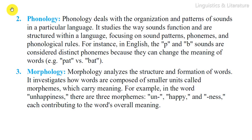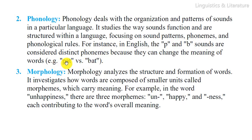For instance, in English the 'p' and 'b' sounds are considered distinct phonemes because they can change the meaning of words — for example, the word 'pet' versus the word 'bad'. The second element of language is morphology.